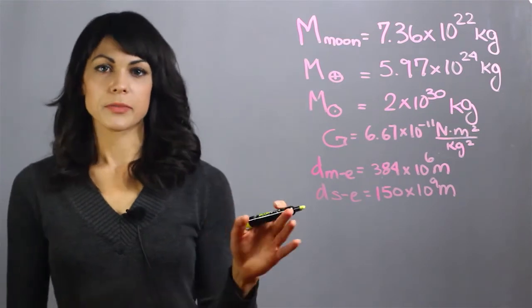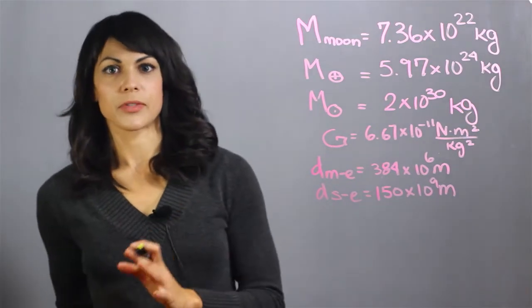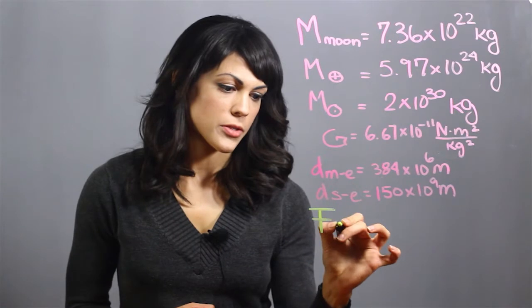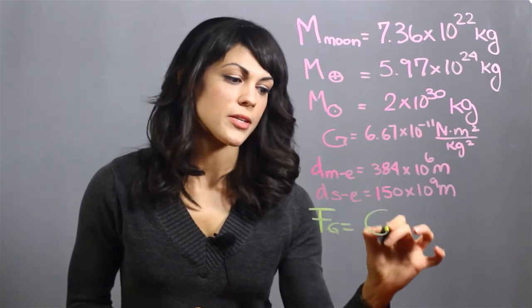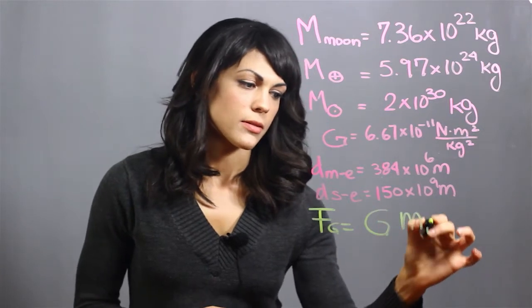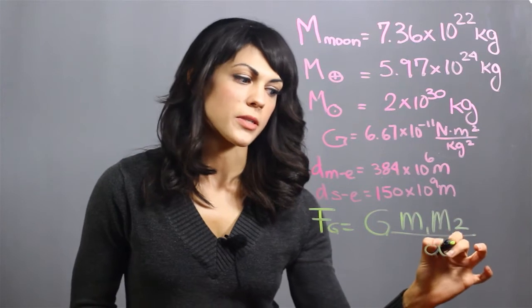So here I have some data that we're going to need to calculate the forces, and you're going to have to plug some of this into your calculator. The gravitational force equation goes as the gravitational constant, illustrated right here, times the mass of the first object, times the mass of the second object, divided by the distance between the objects, squared.